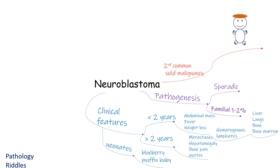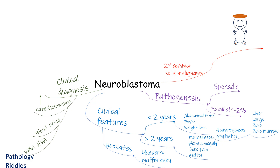The routes of metastasis are through hematogenous and lymphatic systems, and the sites are liver, lung, bone, and bone marrow. Importantly, 90 percent of neuroblastomas produce catecholamines, so there is an elevated level of catecholamines in blood. The catecholamine metabolites — vanillylmandelic acid (VMA) and homovanillic acid (HVA) — are secreted in urine and can be detected to aid diagnosis.